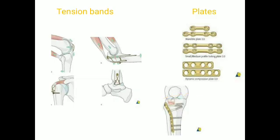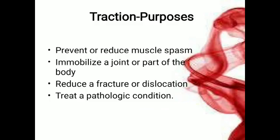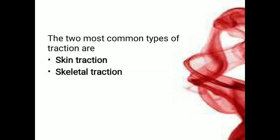Types of fixation include screws such as lag screws, Kirschner wires, and plates and screws — micro plates and mini plates — and intramedullary nails suitable for long bones. This is a diagrammatic presentation for tension bands and plates. Plates can also be DCP and EDCP — dynamic compression plates and eccentric dynamic compression plates. Traction purposes include preventing or reducing muscle spasms, immobilizing a joint or part of the body, reducing a fracture or dislocation, and treating a pathologic condition. The two most common types of traction are skin traction and skeletal traction.